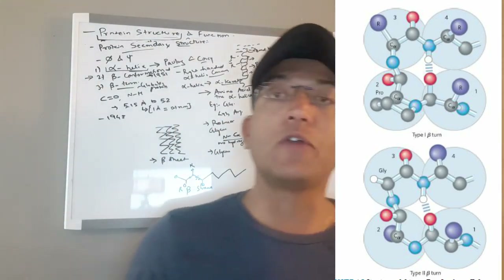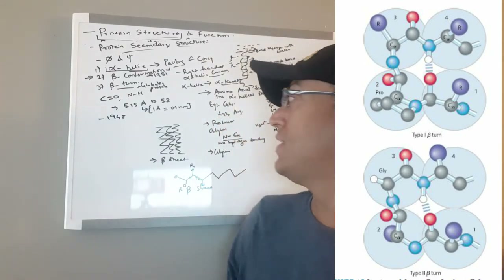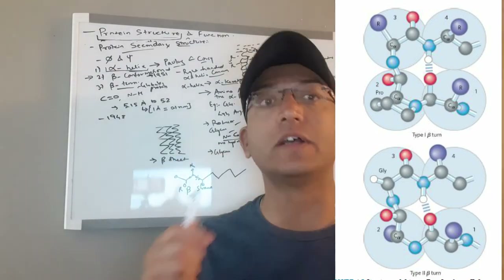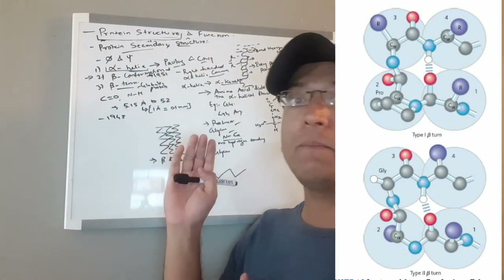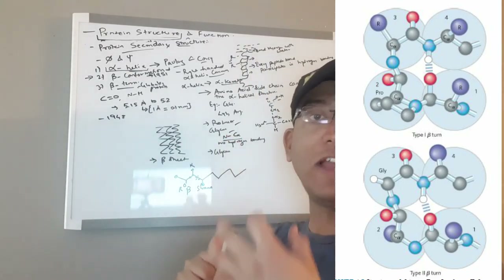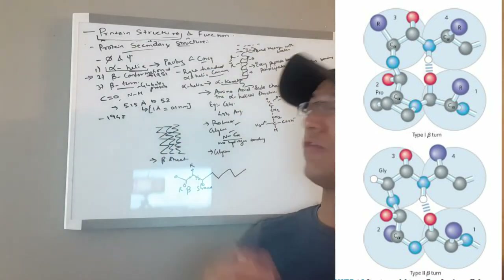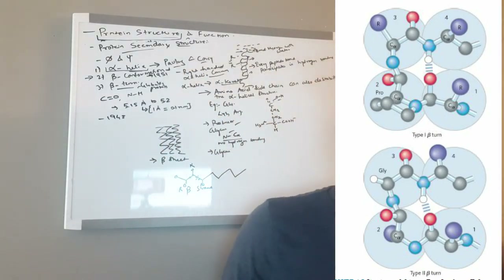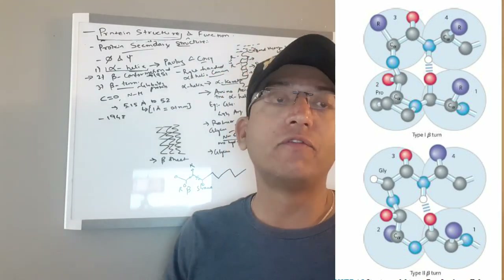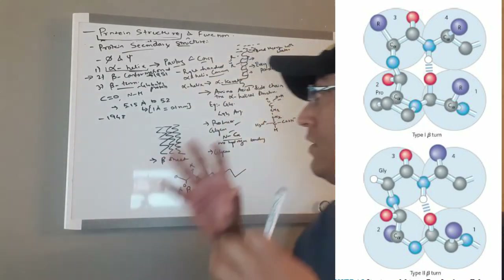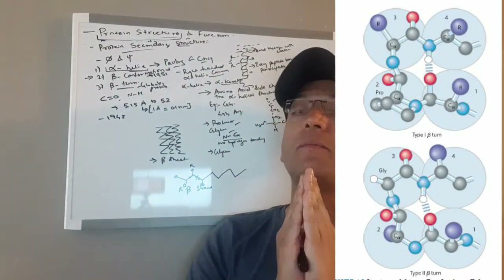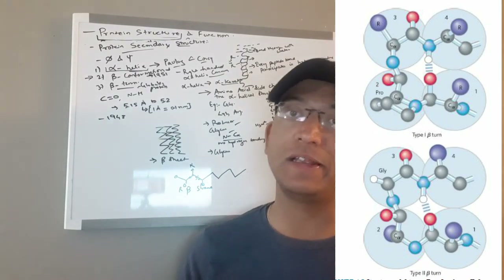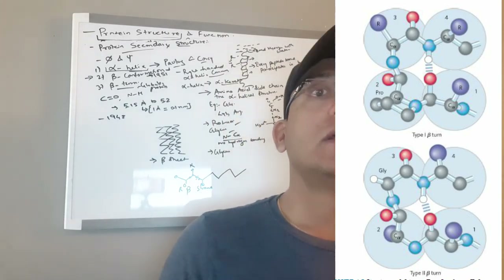Several types of beta turns have been described, each defined by the phi and psi angles of the bonds linking the four amino acid residues. Glycine and proline residues often occur in beta turns — unlike in alpha helices. Glycine is found here because it is small and flexible; proline, because of its rigid ring structure. Beta turns are often near the surface of the protein, where the central two amino acid residues can form hydrogen bonds with water.